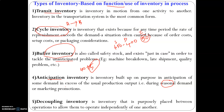A second example is marketing promotions. When you launch a new product, every new product of good quality will have higher demand. You anticipate the spike in demand and produce in excess — that is anticipation inventory. Similarly, if you are going to offer two products for the price of one as a promotion, you must anticipate the sudden spike in demand and ensure excess quantities are available.